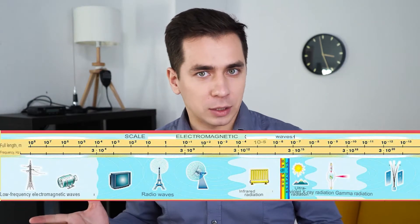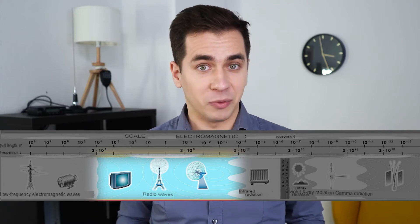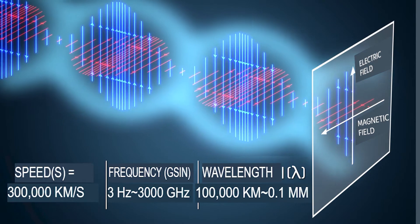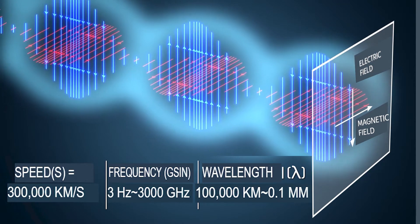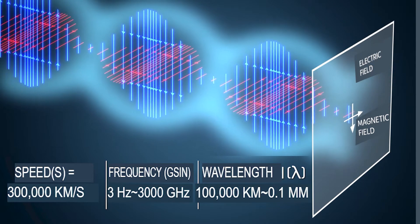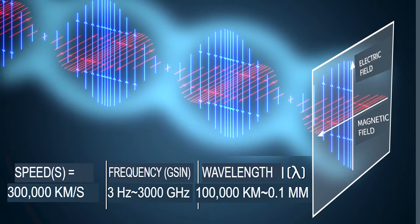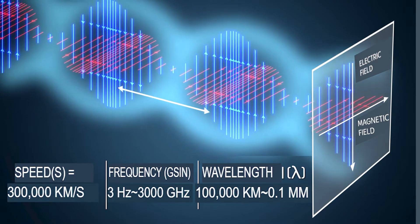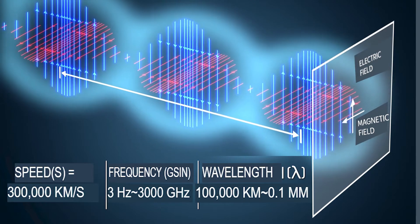A little theory: radio waves, as a special case of electromagnetic waves, are vibrations of electric and magnetic fields. They have three parameters: speed, frequency, and wavelength. The speed is the same for everyone in air — almost the speed of light. Frequency is how fast the fields fluctuate — for radio waves, from units to hundreds of billions of times per second. Wavelength is the distance between repeating regions of the wave, its characteristic size. The higher the frequency, the shorter the wavelength, and vice versa.